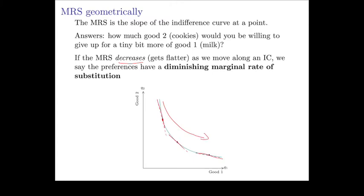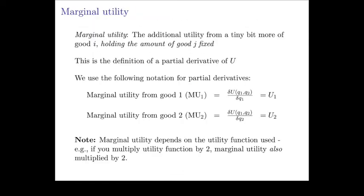The next thing we need to do is figure out how to calculate the marginal rate of substitution when we have a utility function. To do that, we're going to use the concept of marginal utility. Marginal utility is the extra utility you get from a tiny bit more of a given good, holding constant everything else. The marginal utility from good i is essentially the partial derivative of the utility function with respect to good i. We'll use the notation MU1, or capital U subscript 1, to represent the partial derivative of utility with respect to good 1.